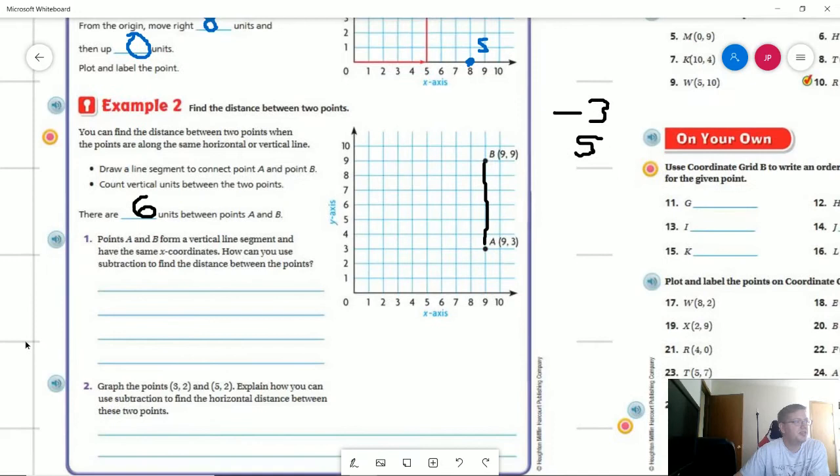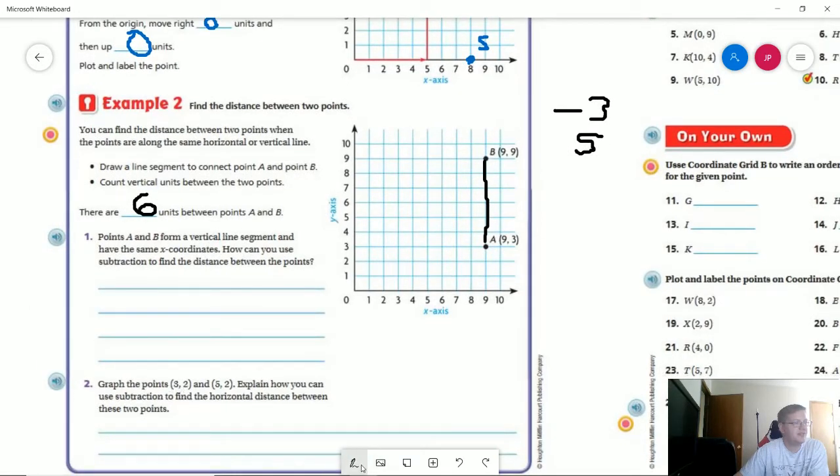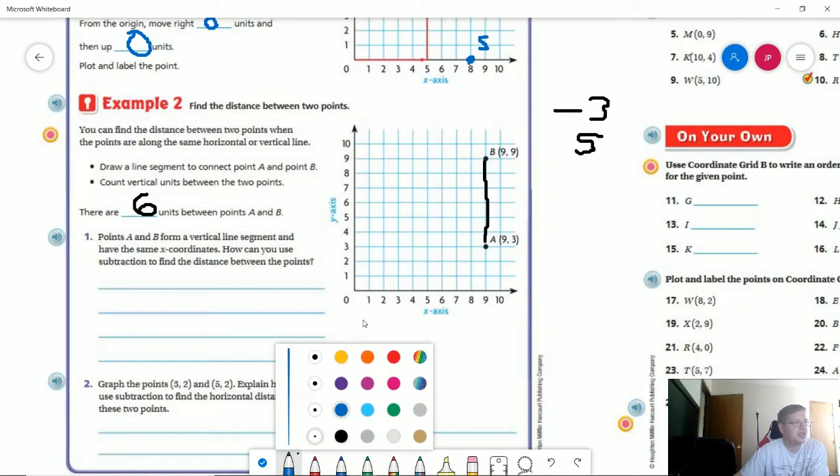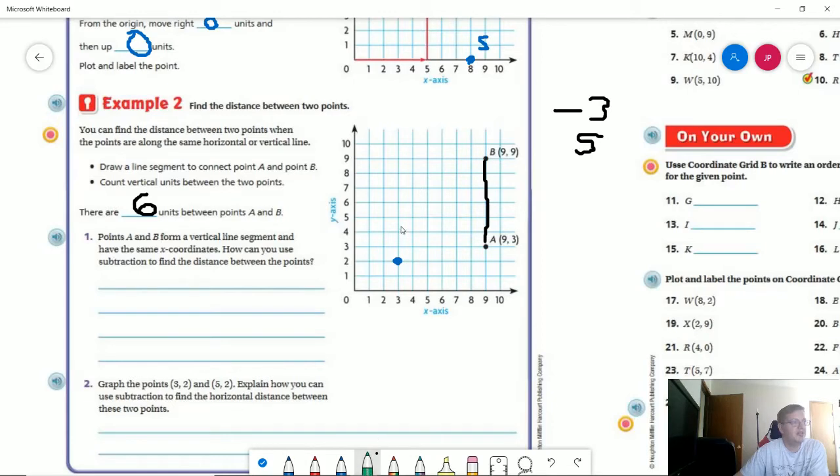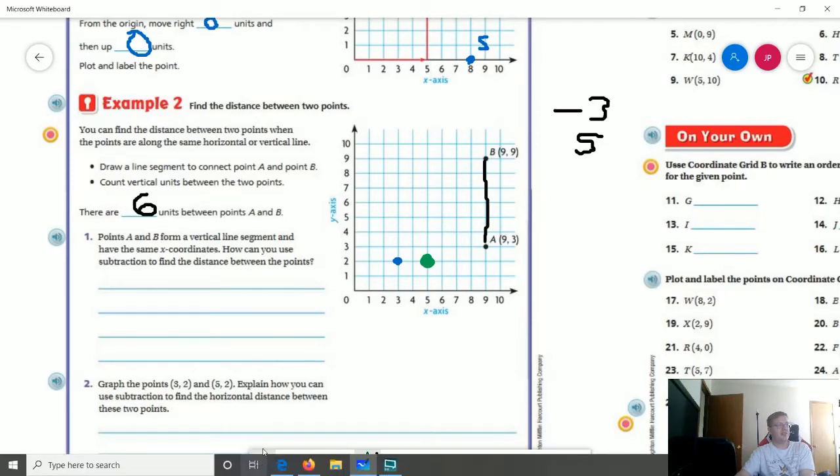So that kind of explains how we would use number one. We can use subtraction or addition. So we can take this nine here for Y and subtract three from the Y value for this one to get six units. For number two, what they want us to do is graph the points three two and five two and explain how we can use subtraction. So we're going to go over three and up two. And that's going to be one of them. My other one is going to be five and two. And that's going to be in green. So I can count over two spots doing it this way, or I can do five minus three equals two.